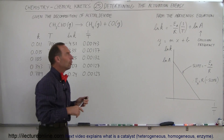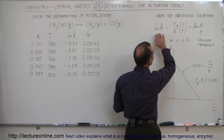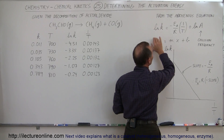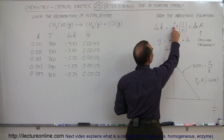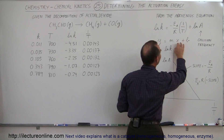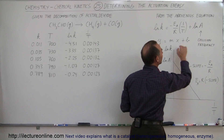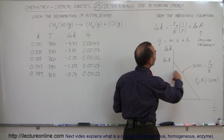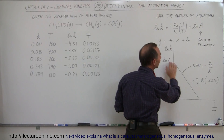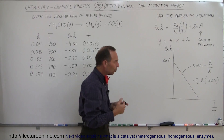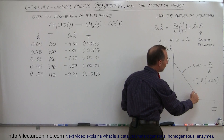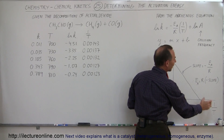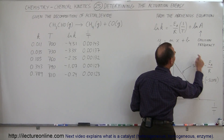From the previous video when we talked about the Arrhenius equation, we saw that the equation had the form of a linear equation, y equals mx plus b, where y was the natural log of the reaction constants. The slope was the negative of the activation energy divided by the gas constant, x was 1 over the temperature, and the intercept b was the natural log of A, where A is what we call the collision frequency. So the slope of this equation — the relation between the natural log of k and 1 over the temperature — is equal to the negative of the activation energy divided by the gas constant.